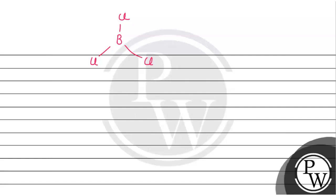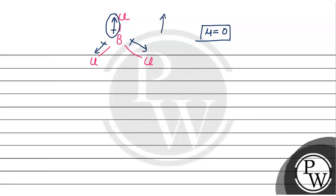इसका मतलब है कि वो direction पे depend करती है. Bromine and chlorine में से chlorine ज़्यादा electronegative है, तो direction chlorine की तरफ होगी — यहाँ पे भी chlorine की तरफ, यहाँ पे भी chlorine की तरफ. तो हम देखें तो तीनों bond polar हैं, लेकिन जो upward dipole moment है उसका effect और इन दोनों की net dipole moment downward है, जो कि बिल्कुल equal and opposite है.